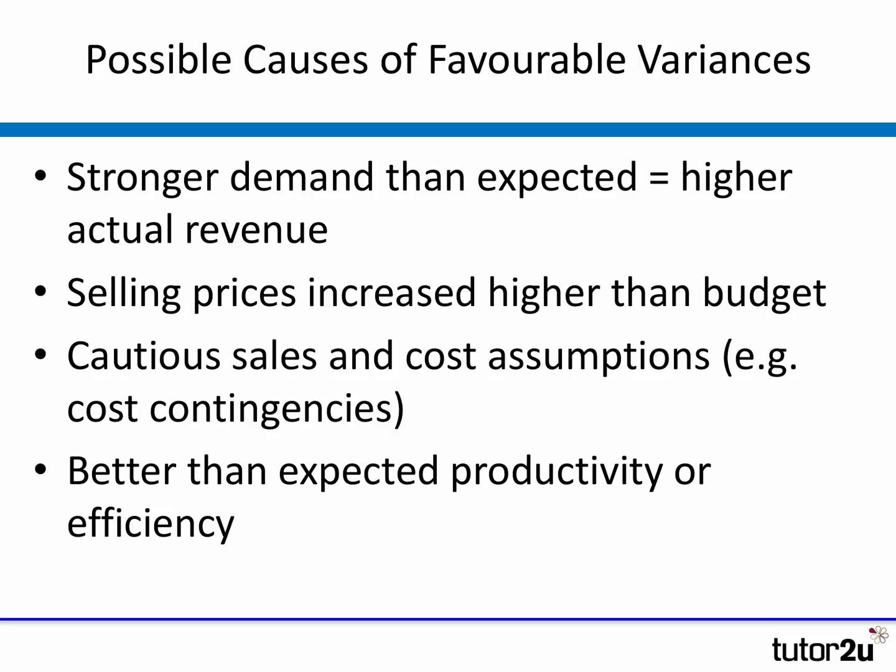Favorable variances are generally good news. They usually occur where sales are higher than budget — perhaps because the budget was quite cautious about the likely sales, didn't anticipate selling more volume, or didn't anticipate a price increase. It could also be that budget costs were too high and actual costs turned out much lower — maybe assumptions were too pessimistic, a supplier price rise didn't take place, or the business operated more efficiently and productively than the budget assumed.